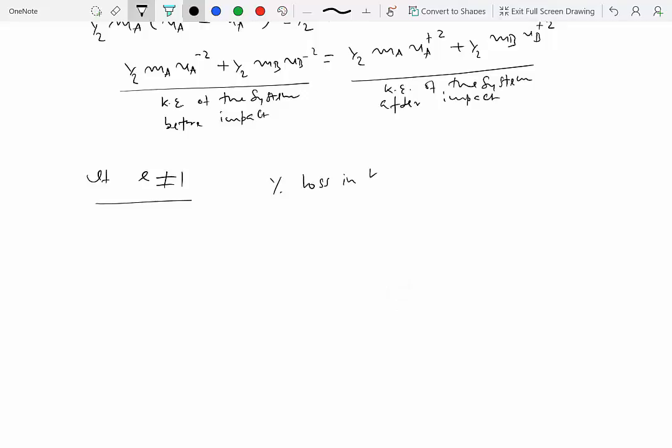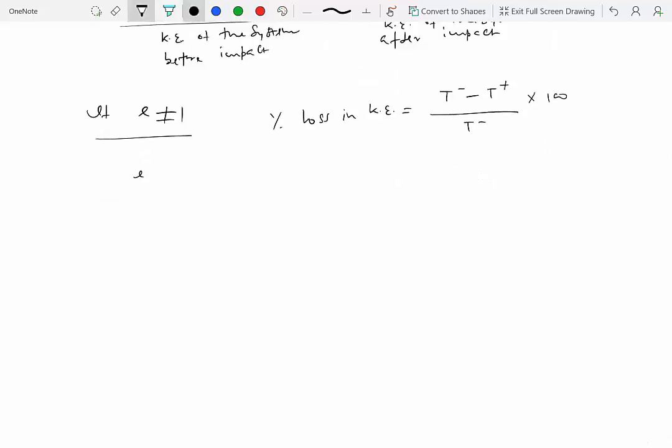Percentage loss in kinetic energy equals the initial kinetic energy minus the final kinetic energy, divided by the initial, times 100. If E is close to 1, say 0.9, there is less loss in kinetic energy versus if E was 0.5. Comparing a collision where E is 0.9 versus one where E is 0.1, which suffers more loss in kinetic energy? The answer is that if E is closer to 1, there will be less loss in kinetic energy.